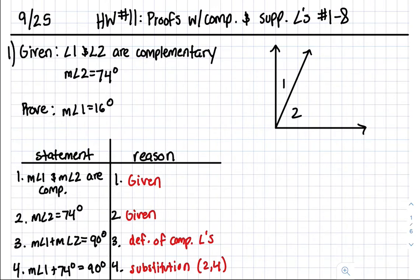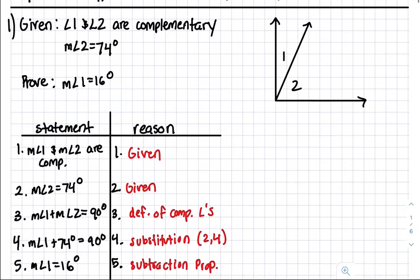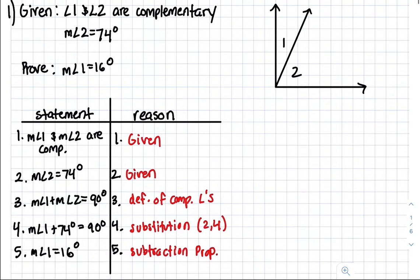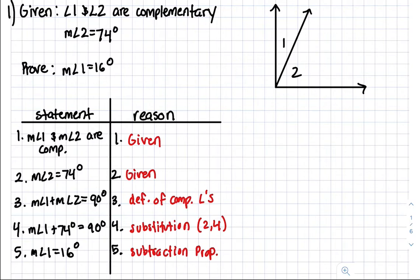Alright, here's homework number 11: proofs with complementary and supplementary angles, numbers 1 through 8. Just going over each problem so that you guys have a clear understanding. If you look at your t-chart, steps 1 and 2 are both given, because they are both given to us in the given statement.